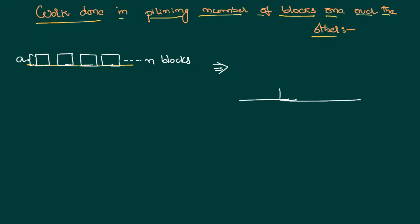We want to keep one block over the other block like this. We want to keep all the blocks one over the other like that, n blocks are there. I would like to calculate what is the work done in this process.